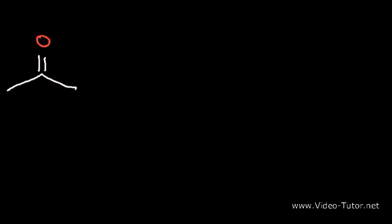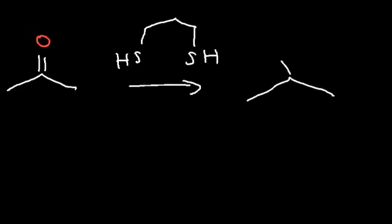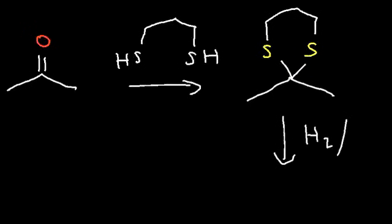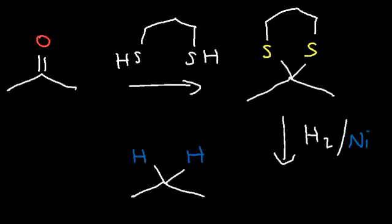Is there a reaction that can reduce a ketone to an alkane under neutral conditions? This is known as the thioketal reduction or the Mozingo reduction. Starting with acetone, the first thing we do is add a thiol — a molecule that has two thiol functional groups — to get a thioketal intermediate. Next we add hydrogen gas using a Raney nickel catalyst. The sulfur atoms are replaced with two hydrogen atoms, giving us an alkane. That's how you reduce a ketone under mild conditions.